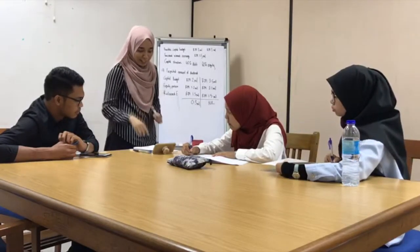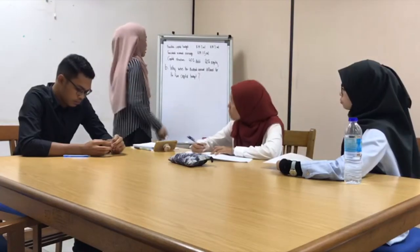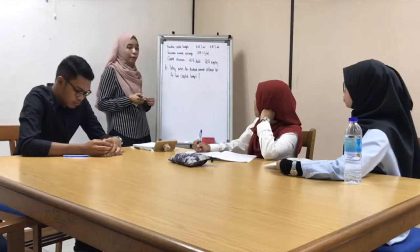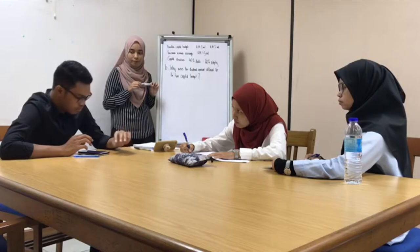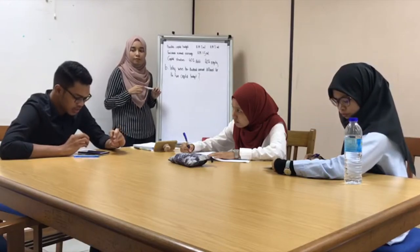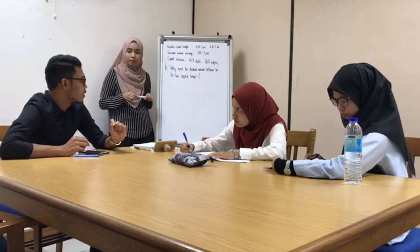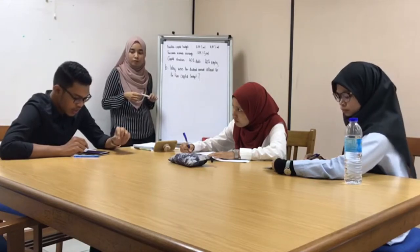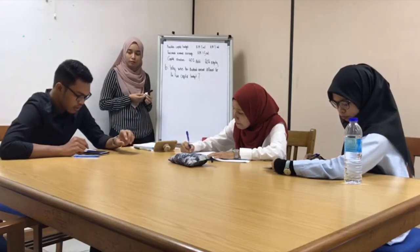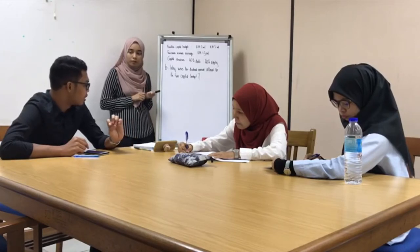Alright, now let's discuss the second question. Basically, the second question is asking why the dividend amounts are different for the two capital budgets. The answer is, according to residual policy, the dividend is paid out if there is an excess amount after all investment opportunities have been deducted. We can see that the higher the capital budget, the higher the equity portion, and the lower the dividend after deducting the equity portion from the retained earnings.